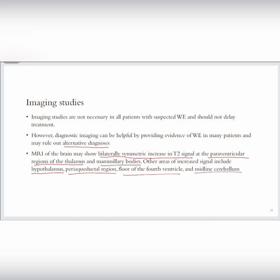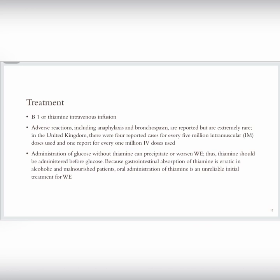How to treat Wernicke encephalopathy? There may be some supportive treatment, but the main treatment is vitamin B1 or thiamine intravenous infusion. Despite adverse reactions including anaphylaxis and bronchospasm, it is really effective. According to data in the United Kingdom, there were four reported cases for every five million intramuscular doses used and one report for every one million intravenous doses used.